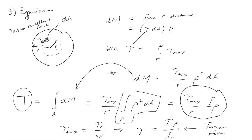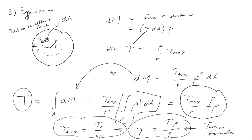This is called the torsion formula. But don't be fooled — this is nothing more than equilibrium. Just as before, we've gone through the three steps: kinematics or the geometry of the motion, constitutive modeling, and finally equilibrium. The geometry of this problem is slightly different from the axial bar, and so the way we measure the internal force is slightly different. In this case, rather than normal stress, we're looking at shear stress.